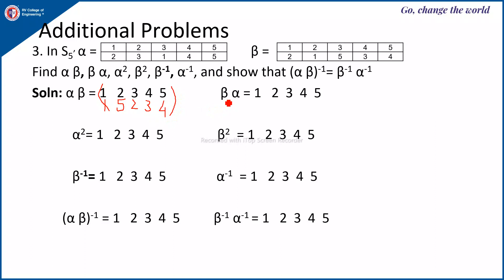For beta into alpha, you start from beta and then go to alpha. For element 1: beta sends 1 to 2, then alpha sends 2 to 3 — so 1 goes to 3. For element 2: beta sends 2 to 1, then alpha sends 1 to 2 — so 2 goes to 2. For element 3: beta sends 3 to 5, and alpha sends 5 to 1 — so 3 goes to 1.